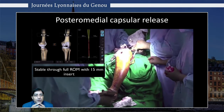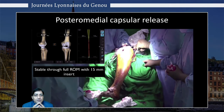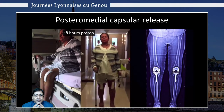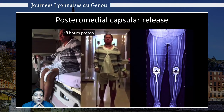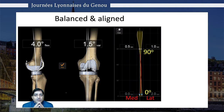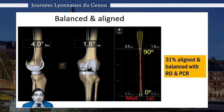This is the patient at 48 hours with the x-rays, and here you can see on navigation it's perfectly balanced and aligned. The remaining 31% of patients required either reduction osteotomy and/or a posterior capsular release to achieve alignment and balance, with no need for any constraint.